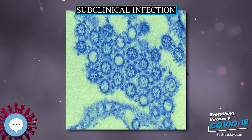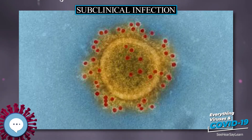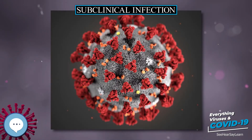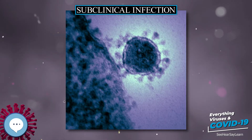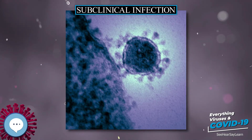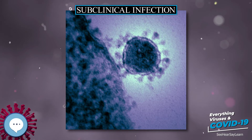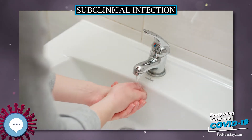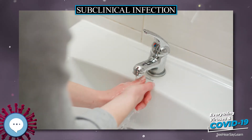A subclinically infected person is thus an asymptomatic carrier of the microbe, intestinal parasite, or virus that usually is a pathogen causing illness, at least in some individuals. Many pathogens spread by being silently carried in this way by some of their host population. Such infections occur both in humans and non-human animals.